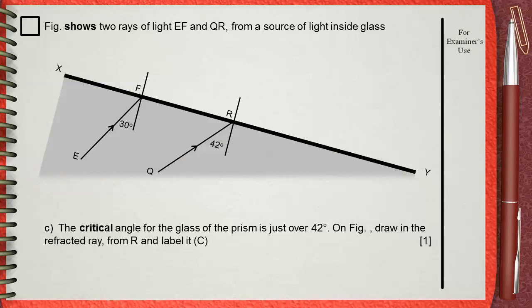Figure shows two rays of light EF and QR from a source of light inside glass. The critical angle for the glass of the prism is just over 42 degrees. On figure, draw in the refracted ray from R and label it C.